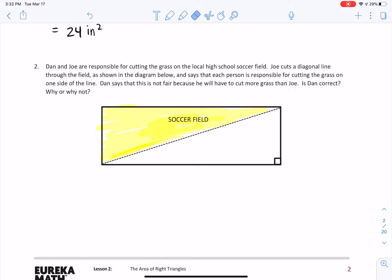We could be really creative about this and cut it a bunch of different ways in half, and it's still going to be the same amount on both sides. So, Dan is wrong. Sorry, Dan, but you have the same amount of work as Joe. You guys both have to cut half of the soccer field. So, stop complaining.